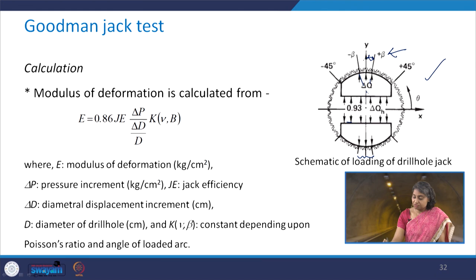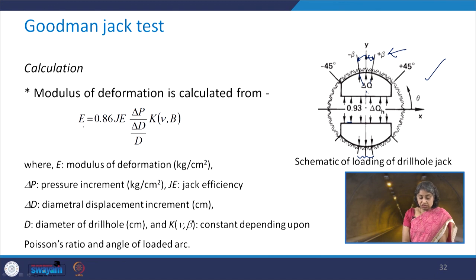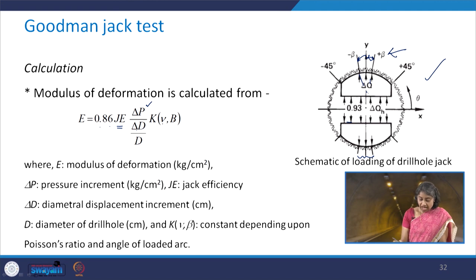The modulus of deformation can be determined by the expression: E = 0.86 × (jack efficiency) × (Δp / (Δd/d)) × k, where k is a function of Poisson's ratio and the angle of the loaded arc beta.